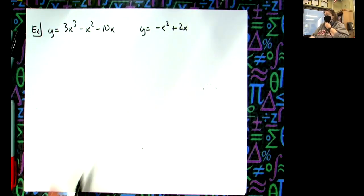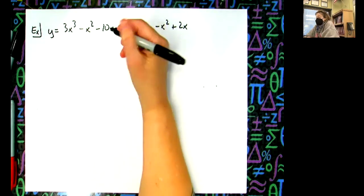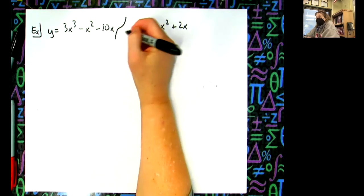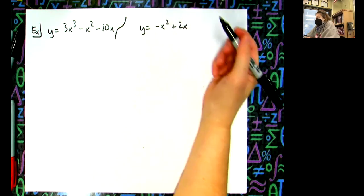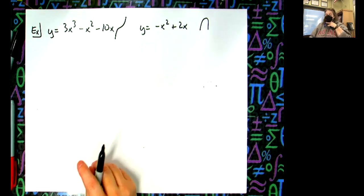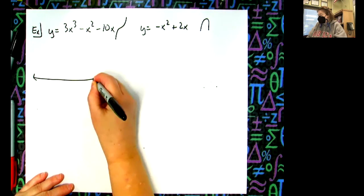Okay, so what do we got here? We got x to the third, positive leading coefficient. We know what this looks like, right? It looks like something like that, but with lots of high hills and valleys probably. And this is an upside down parabola. Now I probably do need to be a little bit more accurate on this one.